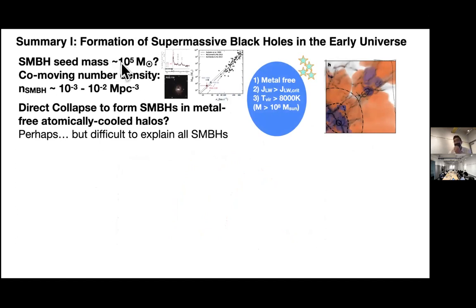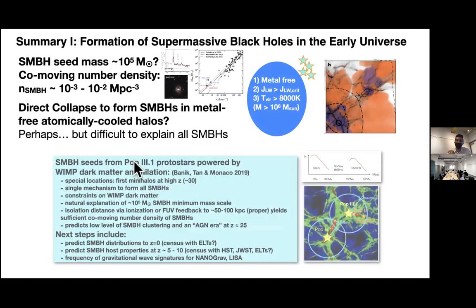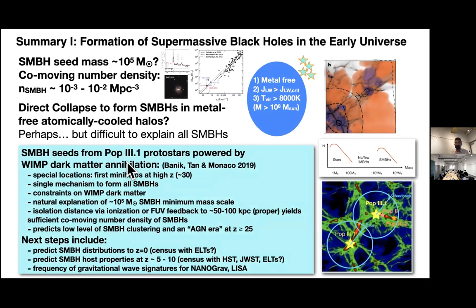So that's a summary of this first part. Maybe we need massive seeds. There's a certain comoving number density of them. If you want to make them with a single mechanism, direct collapse on its own, I'd say struggles. So we proposed a single mechanism based on somewhat exotic physics - dark matter annihilation heating in the very first population 3.1 protostars to change the story of protostellar evolution and bifurcate. So with this route, get up to the supermassive scale and make all the seeds in one go very early. And it makes a lot of predictions. We're a small group working on this. We need help. So if anybody has an idea here to help us test this, it's very interesting for us.